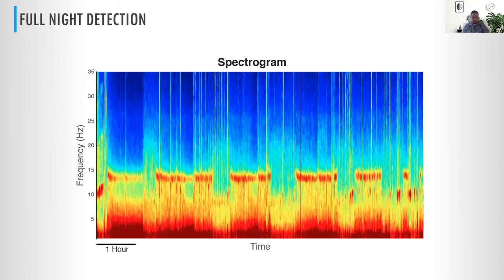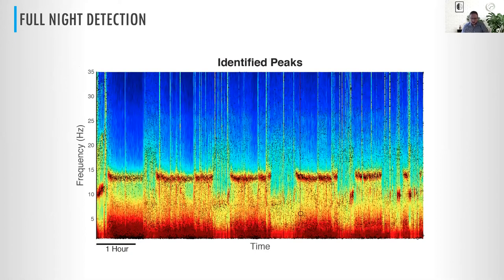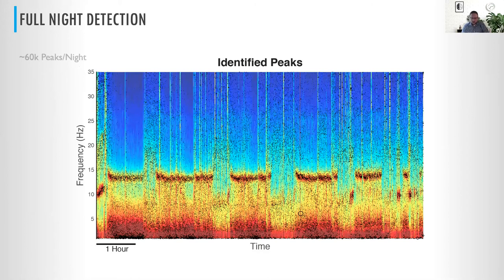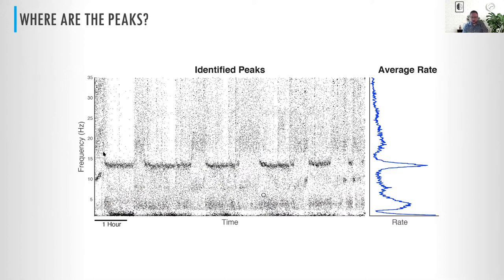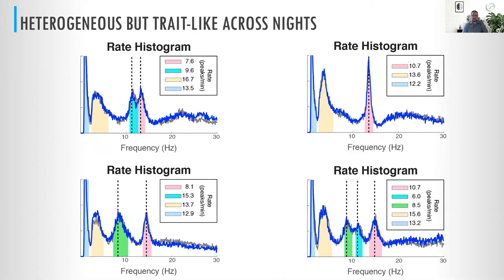Instead of trying to say which ones matter, we look across time and for each frequency say: what's the average rate of TF peaks at each of these frequencies? We can come up with this rate histogram. For a given subject, this rate histogram shows a big mode right where we see all the traditional spindle activity.